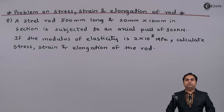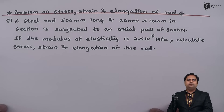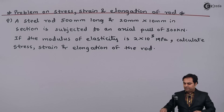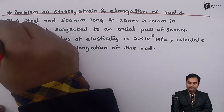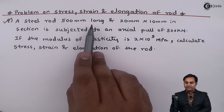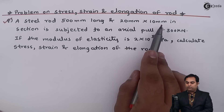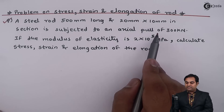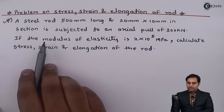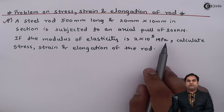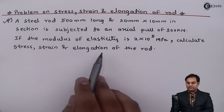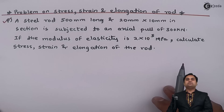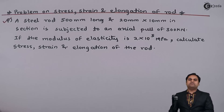Hello friends. In this video we are going to see a problem based on stress, strain, and elongation of a rod. The question is: a steel rod 500 mm long and 20 mm × 10 mm in section is subjected to an axial pull of 300 kilo Newton. If the modulus of elasticity is 2×10⁵ megapascal, calculate stress, strain, and elongation of the rod. I will write the given data.